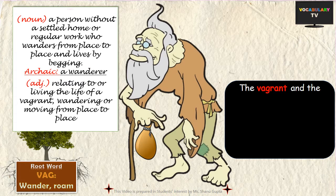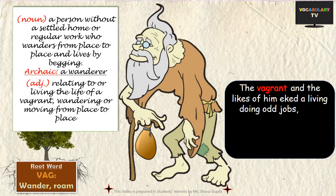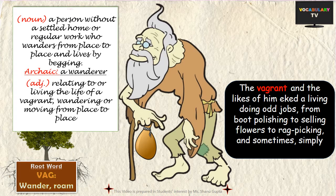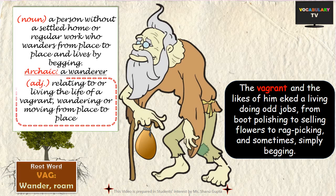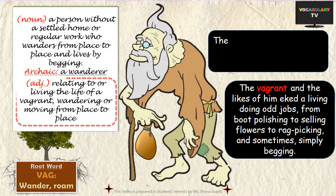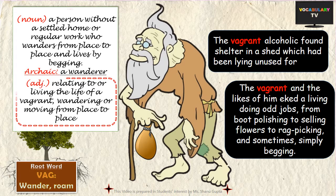For example, 'the vagrant and the likes of him, either living doing odd jobs — from boot polishing to selling flowers to rag picking and sometimes simply begging' — here 'vagrant' is a noun. As an adjective, 'vagrant' would describe any person who wanders a lot and moves from place to place, living the life of a vagrant. Like in this sentence: 'The vagrant alcoholic found shelter in a shed which had been lying unused for years.'